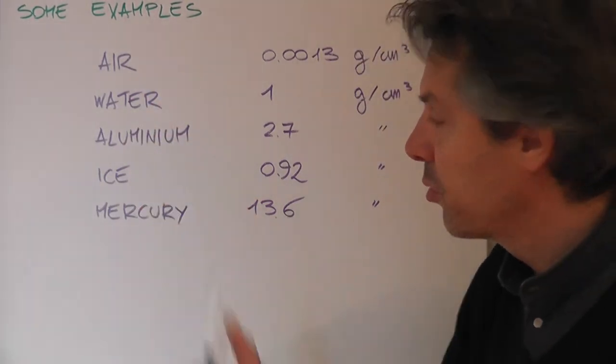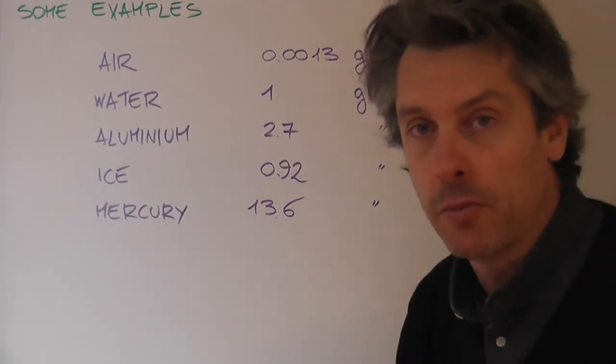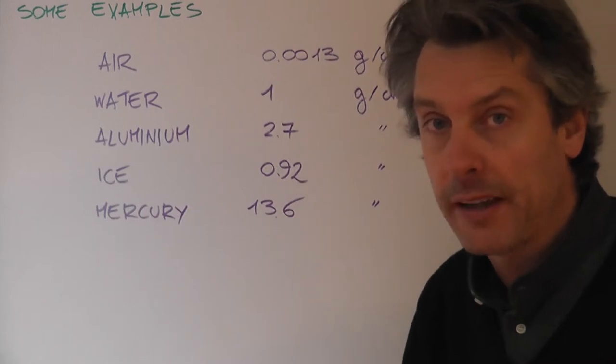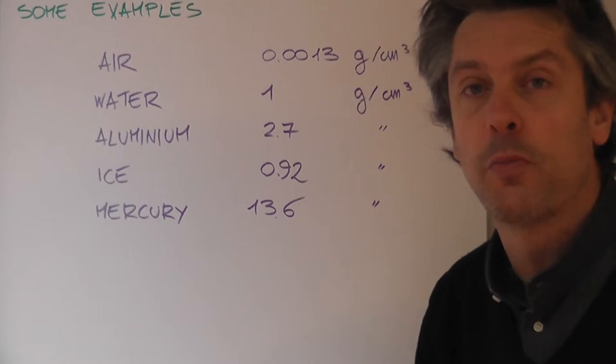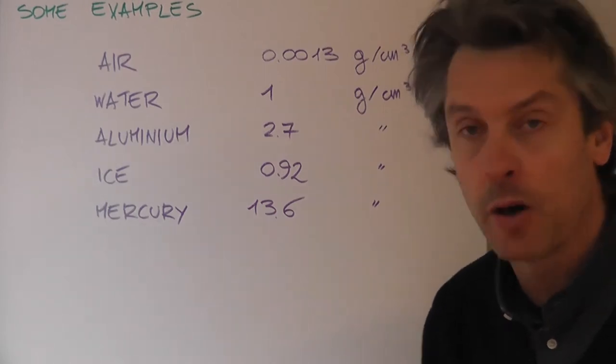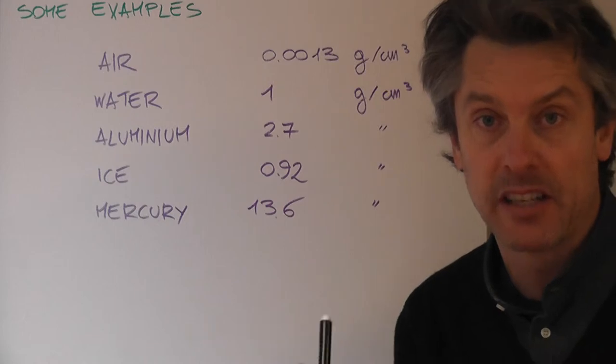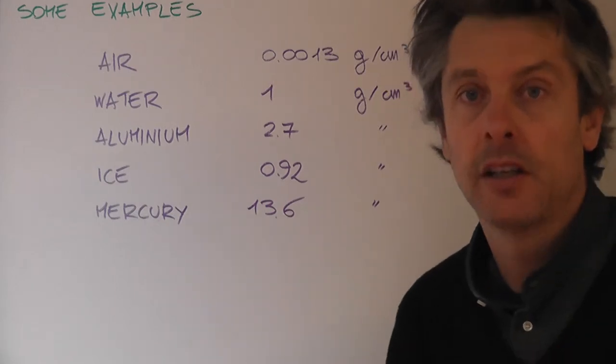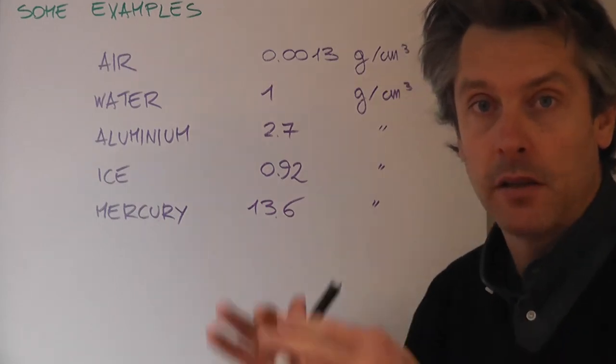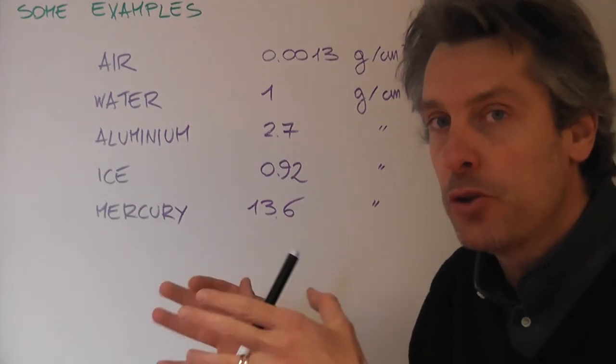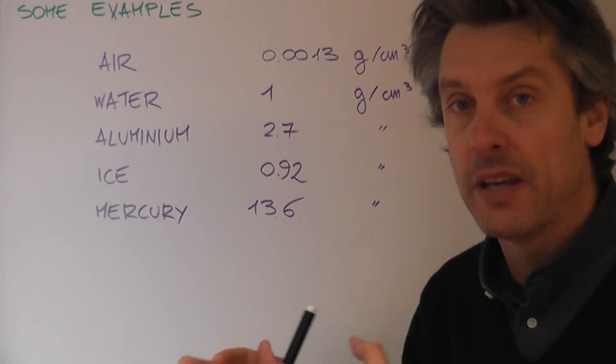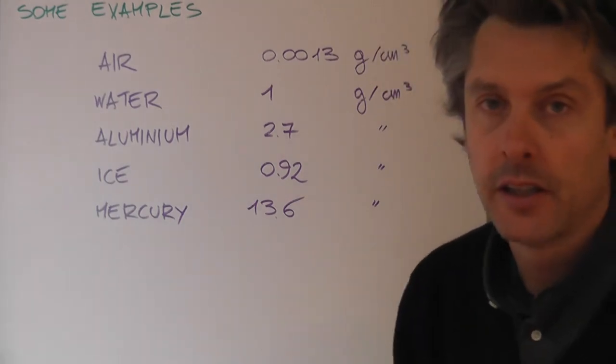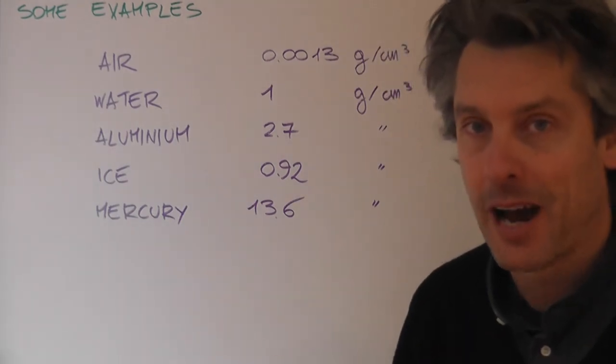Moving from a liquid to a solid, aluminum, a very common metal we use a lot, has a density of 2.7. At this point you would expect a pattern here. The pattern being a gas will usually be less dense than a liquid, which in turn will be less dense than a solid. Of course, you have some counter examples.